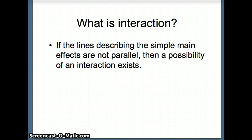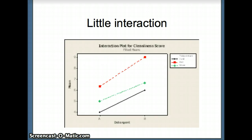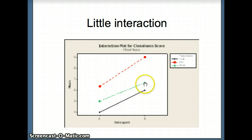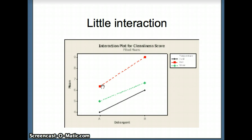So what exactly is interaction? One way to think about this is: if the lines describing the simple main effects are not parallel, then a possibility of an interaction exists. Consider a case where they are parallel — this case will have little interaction. We have two types of detergent, A and B, measuring the cleanliness of a laundered shirt. With hot water, warm water, and cold water, in each case detergent B led to a higher cleanliness score than detergent A. The lines never intersect. Since the lines do not intersect, we would say there is likely little interaction.